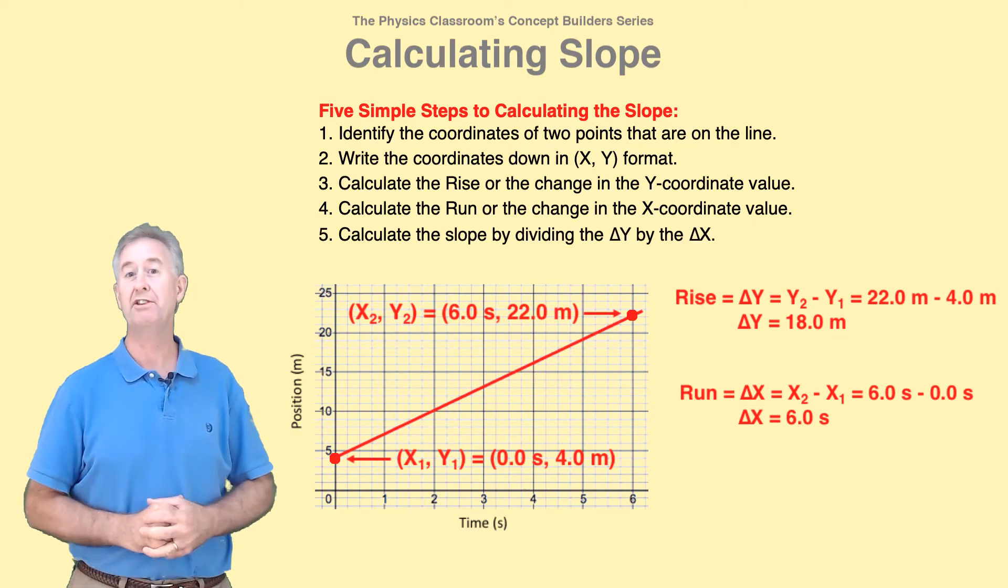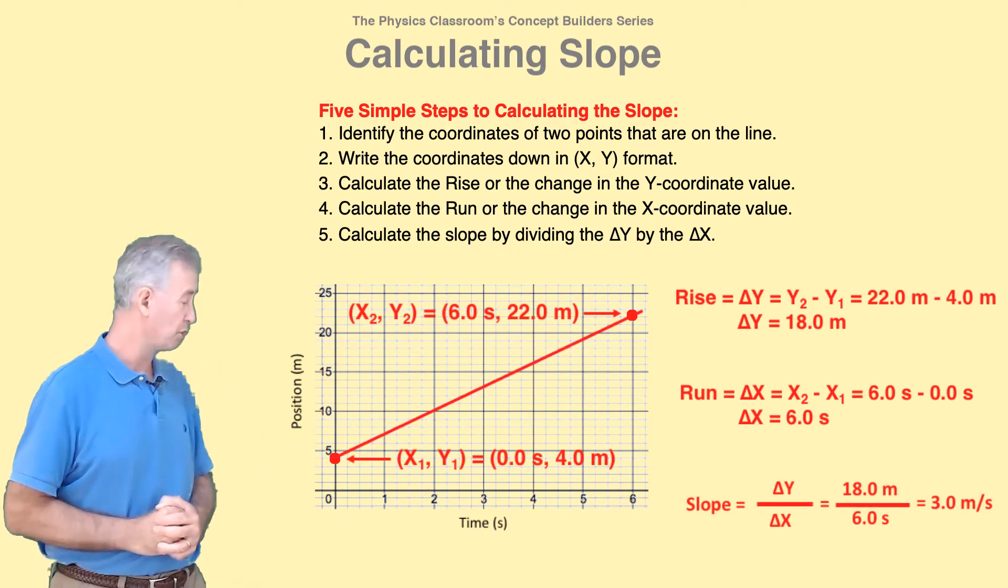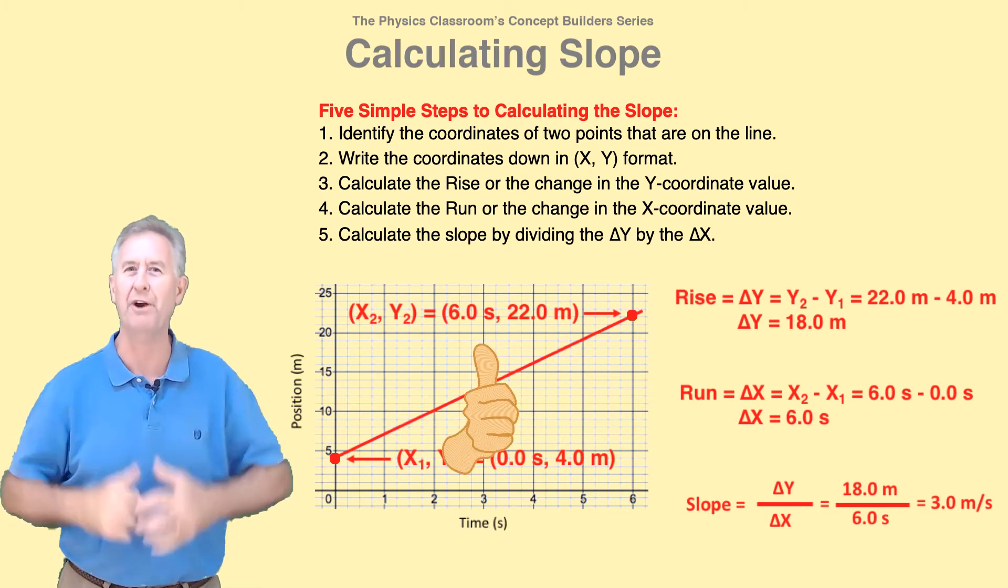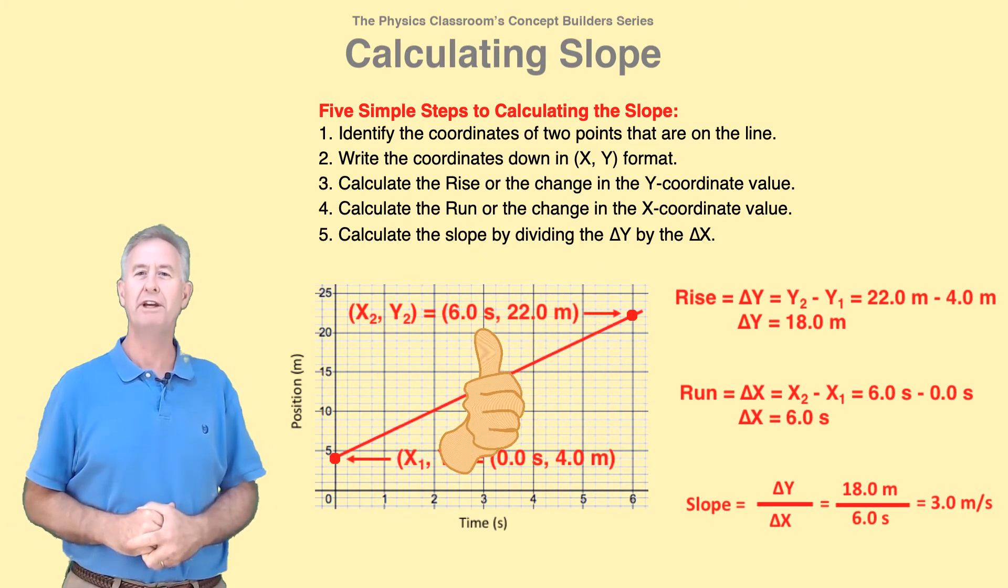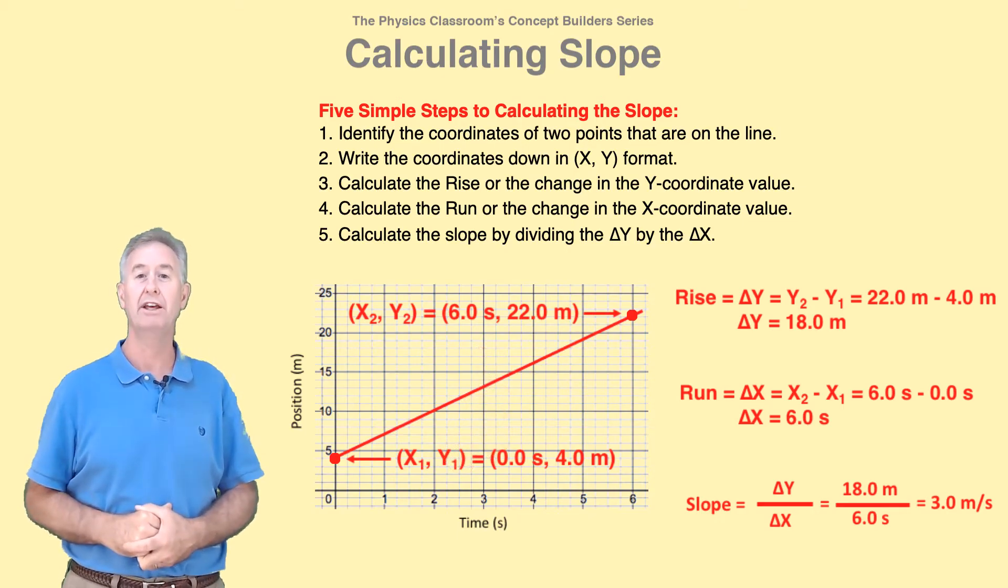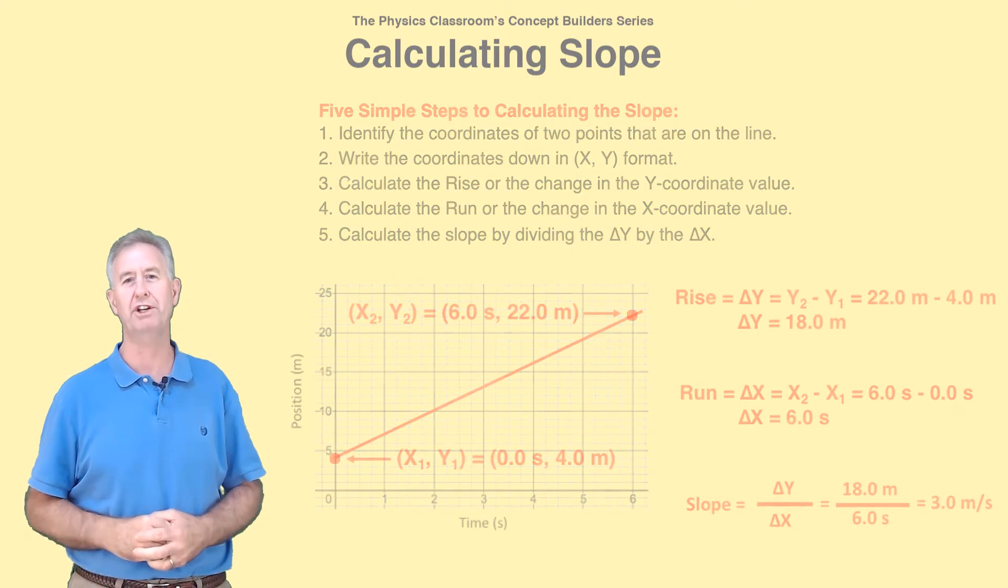Now calculate the slope by dividing delta y by delta x. Show your work, show your answer, show your unit, and show your grade. 18.0 meters divided by 6.0 seconds is 3.0 meters per second. The unit will always be the y-coordinate unit divided by the x-coordinate unit.